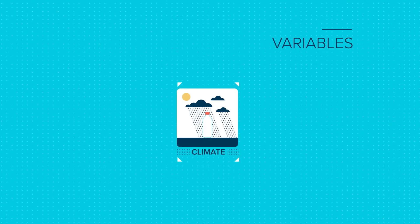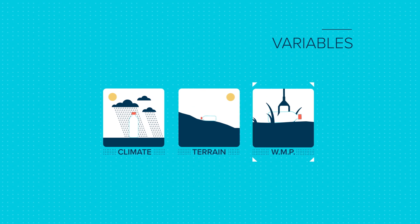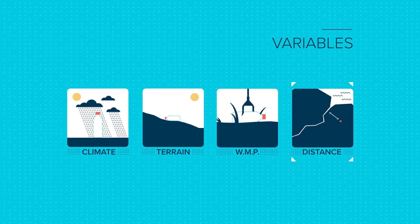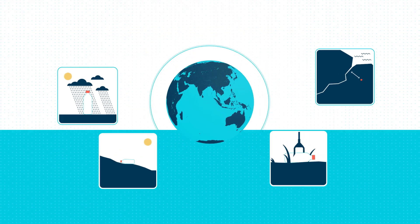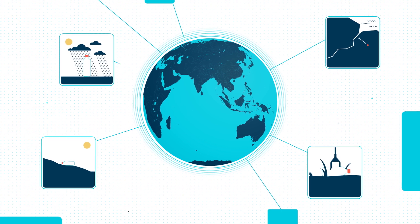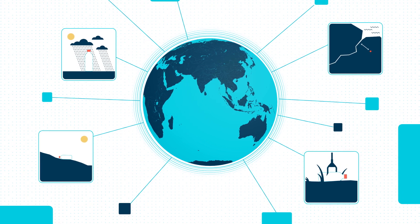Variables such as climate, terrain, waste management practices, the distance plastic needs to travel to reach a river, and then the ocean, are all of influence. By including these factors, and the results from dozens of measurement campaigns, a much more nuanced picture evolves.